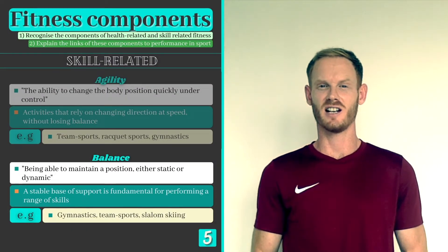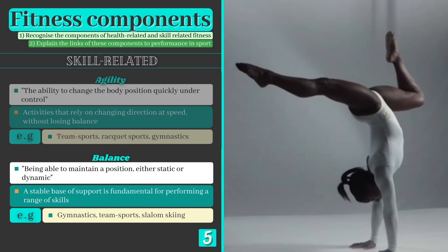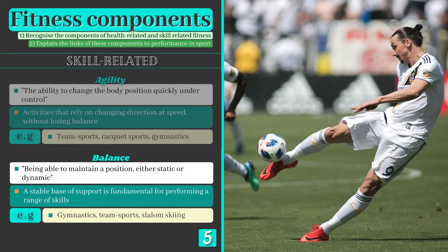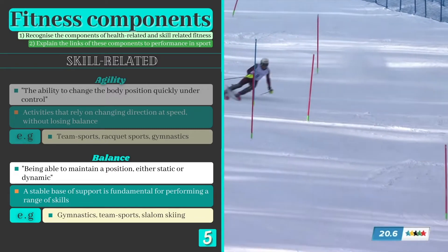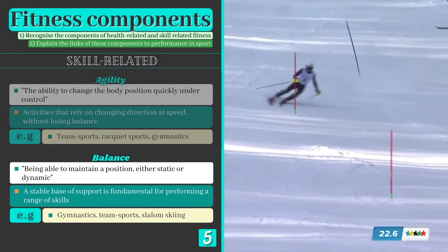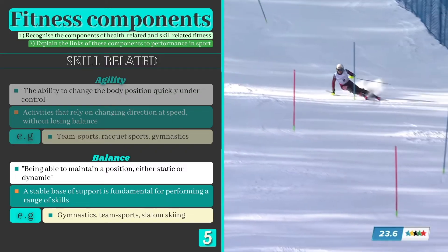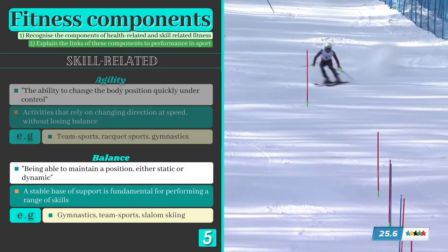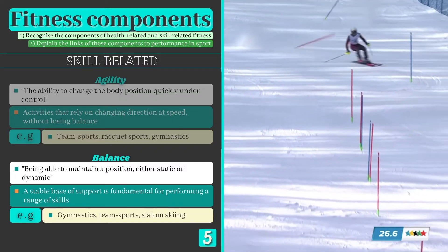Number 2 is balance, which can be defined as being able to maintain a position, either static or dynamic. Static or stationary balance is important for gymnasts when holding a handstand, while dynamic or moving balance is required when volleying in football or racing a slalom course in skiing. A lack of balance here would make it extremely difficult for the skier to maintain control and could lead to a fall or loss of direction.